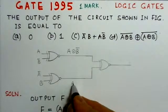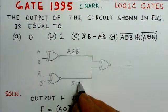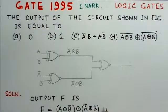Similarly, here we can write the output for this gate, A bar exclusive NOR B. This is the output at this point.